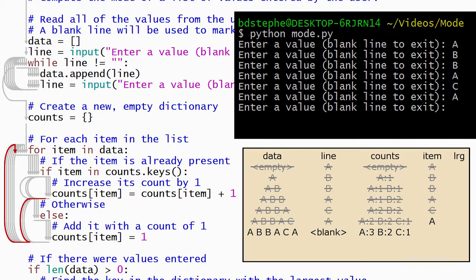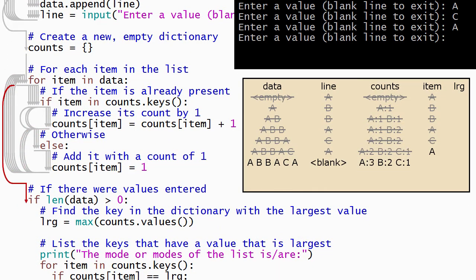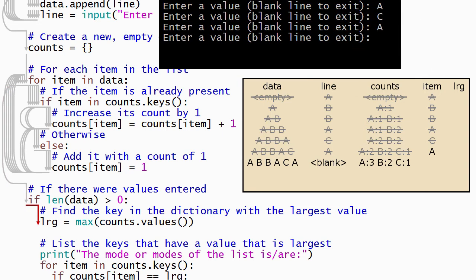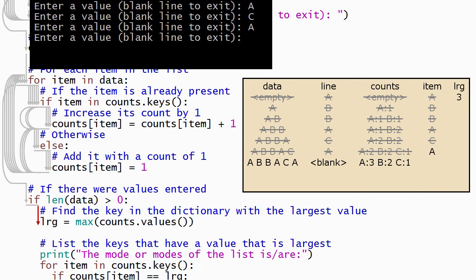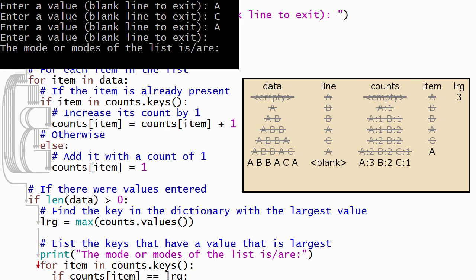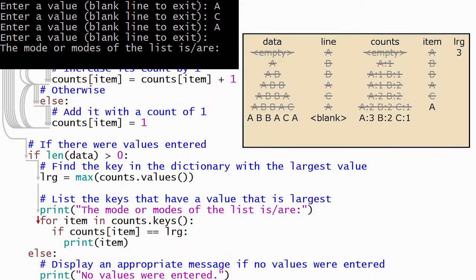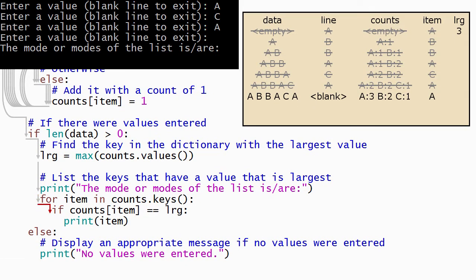When Python returns to the top of the loop, there are no remaining values to process, so it goes on and runs the rest of the program. The condition on this if statement is true, so Python runs its body. The max function finds the largest value in the dictionary, which is 3, and stores it into the largest value variable. Then the output message is displayed, and the for loop is executed. I'll assume that the values are processed in alphabetical order, however the actual order that Python uses could be different. a is stored into item, and the body of the loop runs. The value in the dictionary for key a is equal to the largest value, so the condition on the if statement is true, which causes Python to display an a.